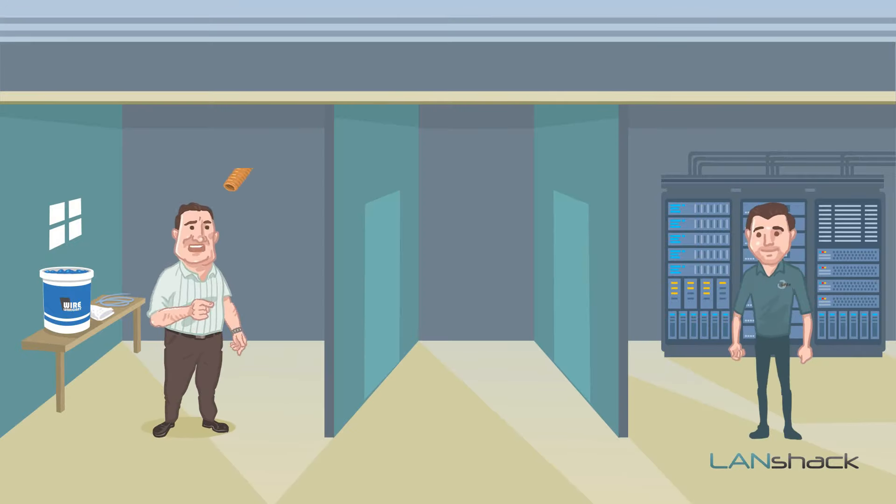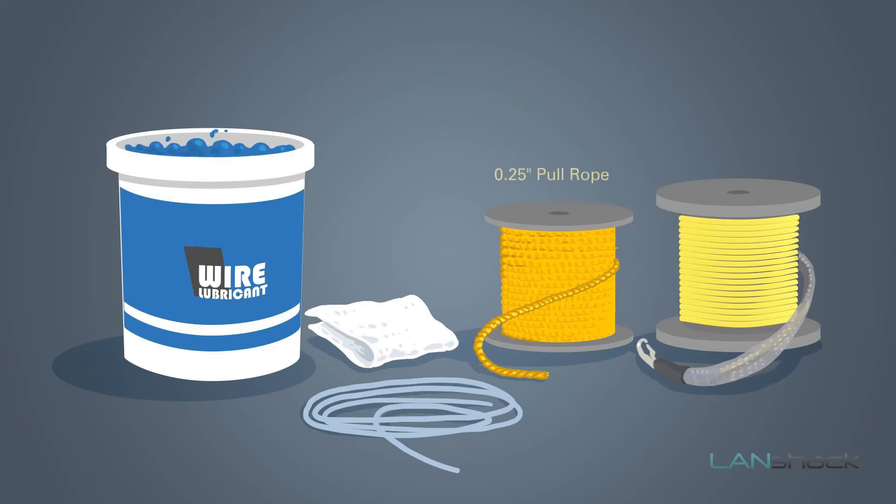In this example, we have a 30-foot piece of inner duct across the ceiling. We will also need pull string, quarter-inch pull rope, cable lubricant, and a pre-terminated fiber optic assembly.